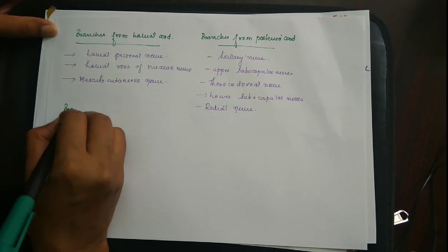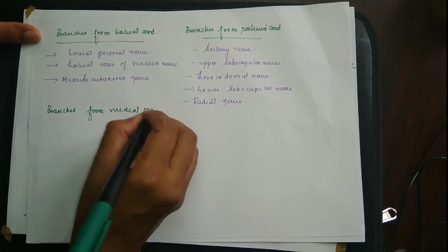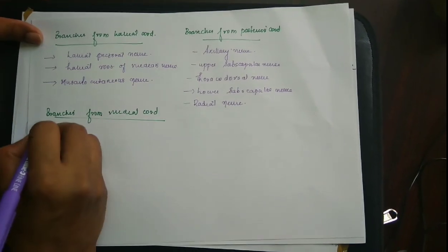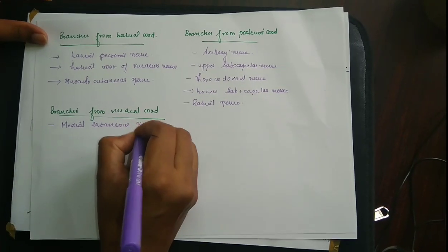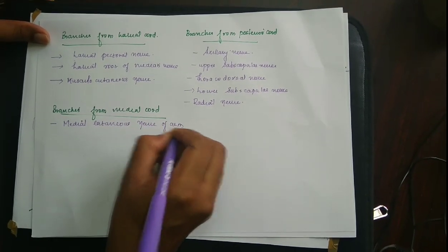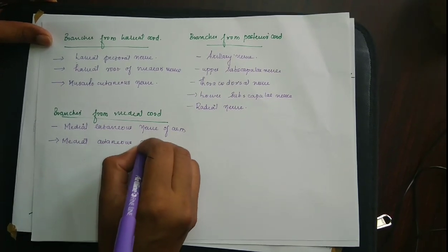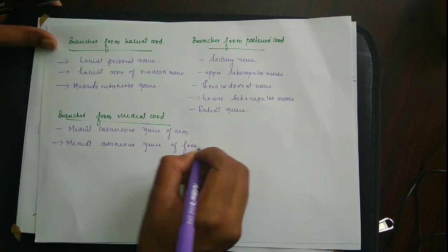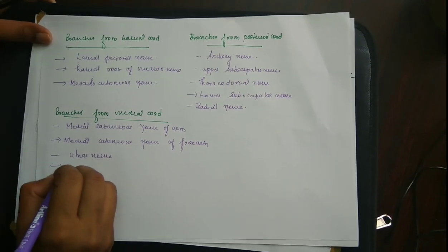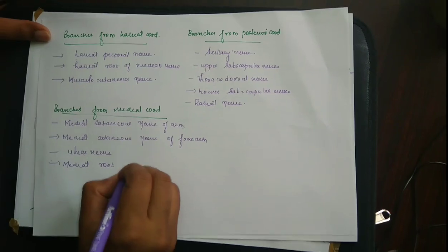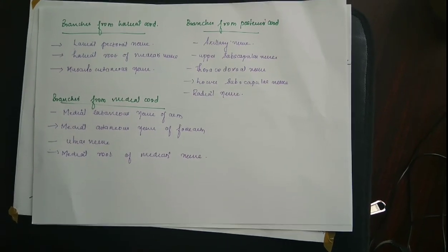The branches from the medial cord are the medial cutaneous nerve of the arm, the medial cutaneous nerve of the forearm, the ulnar nerve, and the medial root of the median nerve. That's all about the brachial plexus. Thank you.